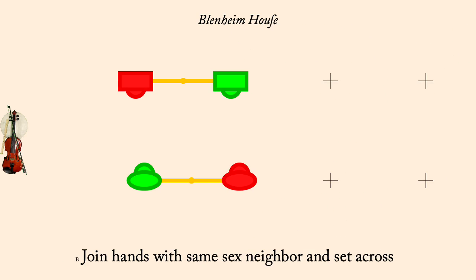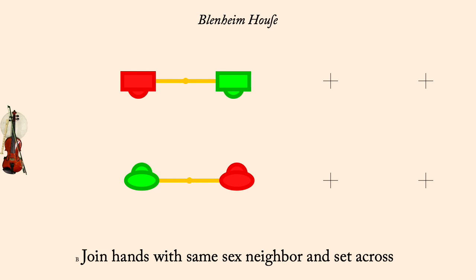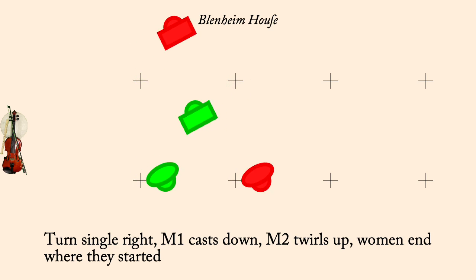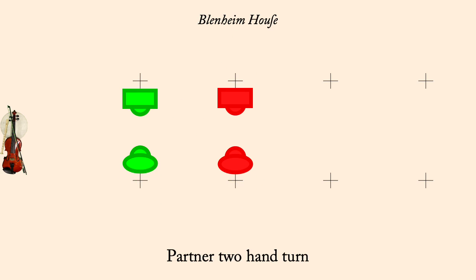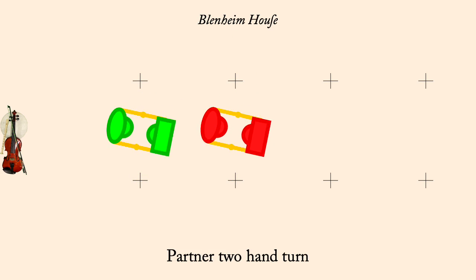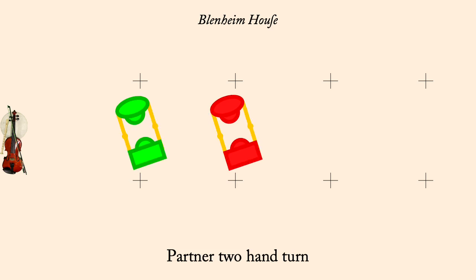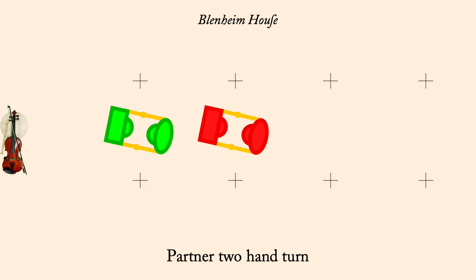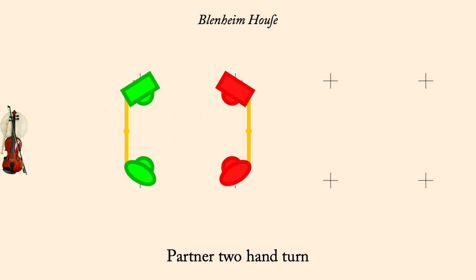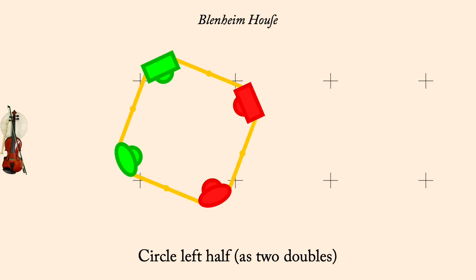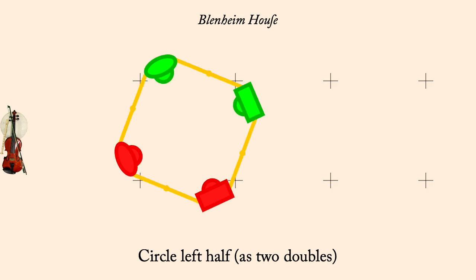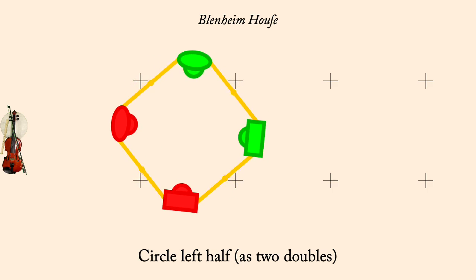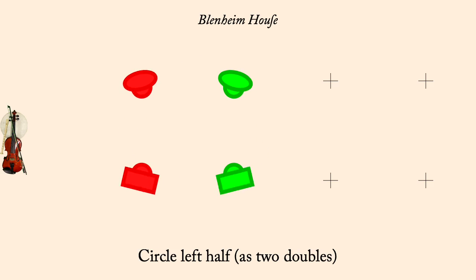Set. Turn single right. Partner two-hand turn. Circle left half. One's long cast down as twos lead up.